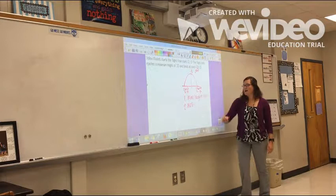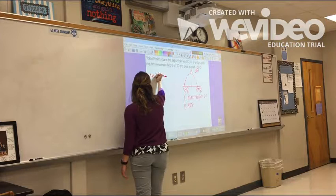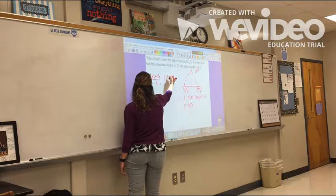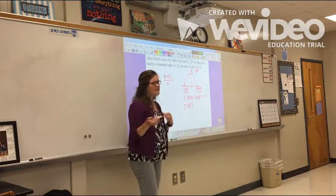Alright, my midpoint formula is x1 plus, whoops, that's not a plus, plus x2 divided by 2. y1 plus y2 divided by 2. It sounds familiar. And you might have just thought of like the average between these.